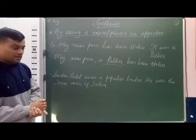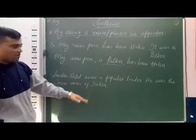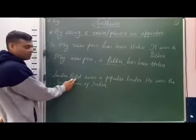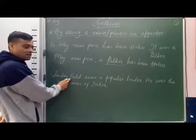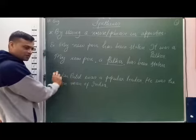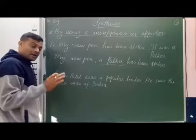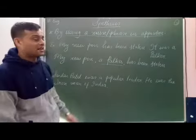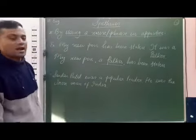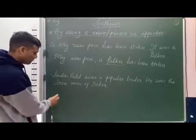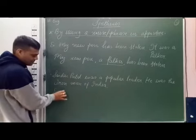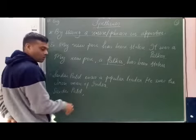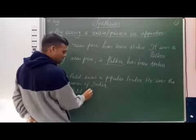See the next example: 'Sardar Patel was a popular leader. He was the Iron Man of India.' In both sentences, the noun or subject is 'Sardar Patel,' and about him the information given in the second sentence is that he was 'the Iron Man of India.' So Sardar Patel — and about him — the Iron Man of India.